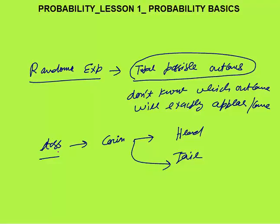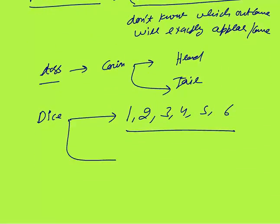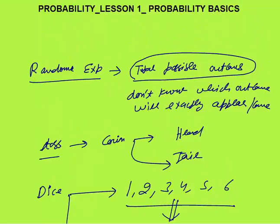Same way, you throw a dice. You know the total possible outcomes — it could be one, two, three, four, five, or six. But once you throw the dice, we don't know what outcome will exactly come. We know the total possible outcomes, but we don't know which one will appear. That is the meaning of a random experiment, and in probability we deal only with random experiments.